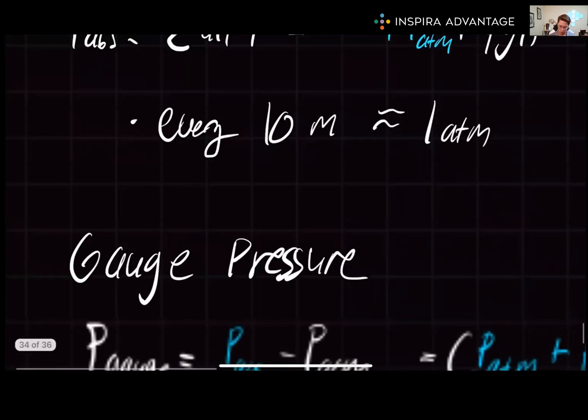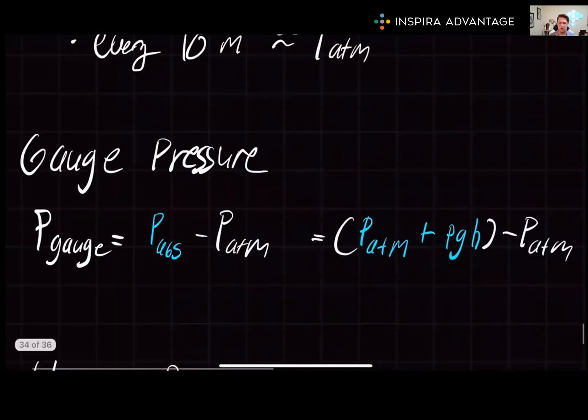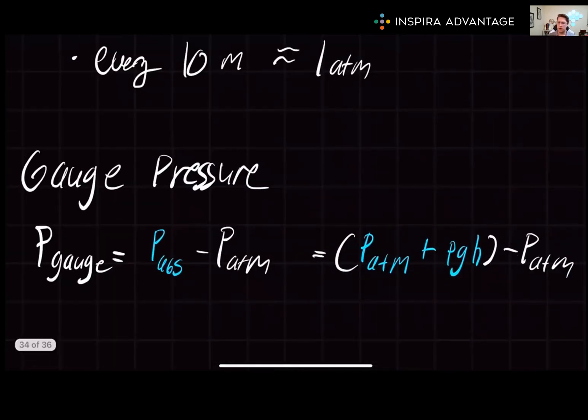Next, let's talk about a more confusing pressure known as gauge pressure. Gauge pressure is the difference between absolute pressure and atmospheric pressure. In liquids, gauge pressure is caused by the weight of the liquid above the point of measurement.